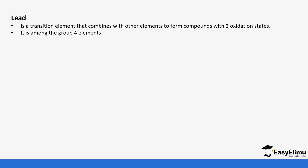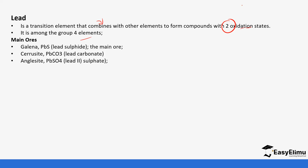Lead is a transitional element that combines with other elements to form compounds with two oxidation states. Lead is among the group 4 elements. We do not discuss in detail the electron configuration of lead in high school, but we know that it has two oxidation states. The main ores of lead are galena, cerussite, and anglesite. Galena is the main ore.